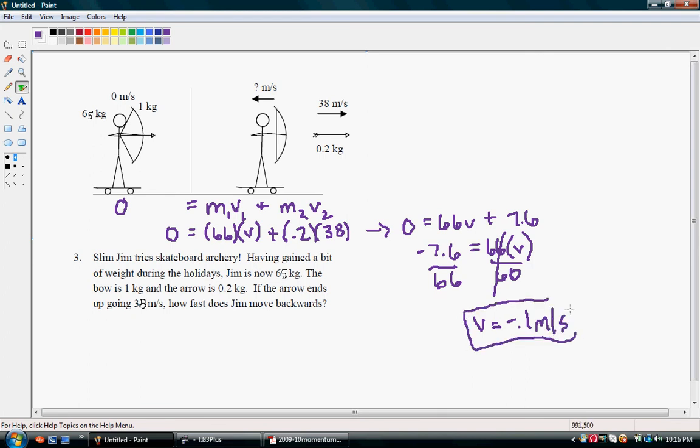Now, the reason that the arrow goes so fast forwards is because it has such a small mass. So, the momentum of Jim still has to be negative 7.6 because negative 7.6 plus 7.6 is going to equal 0. Our net momentum is the same. The momentum we have on the left side is going to be the momentum we have on the right side.